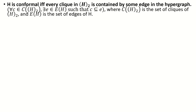Moving on, let's look at two theorems that can help us determine whether a hypergraph is conformal. Our first theorem is: a hypergraph is conformal if and only if every set of vertices inducing a clique in the two-section is contained by some edge in the hypergraph. What this theorem is really saying is that conformality is equivalent to always being able to find an edge containing any clique in the two-section.